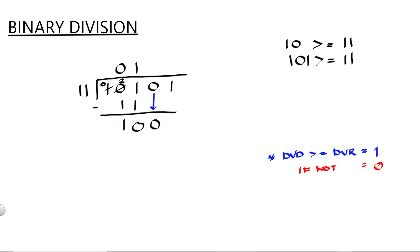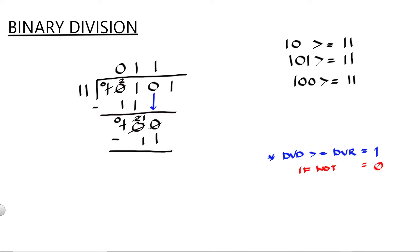Is 100 greater than or equal to 11? The answer is yes. So we have 1 here. And 1 multiplied by 11 is equal to 11. Then proceed to subtraction. 0 minus 1 — we can't do 0 minus 1, so we need to borrow from here. So this becomes 0 and this becomes 2. And we still need to borrow for this column, so we'll borrow a 1 from here. So this becomes 1 and this becomes 2. 2 minus 1 is equal to 1. 1 minus 1 is equal to 0.